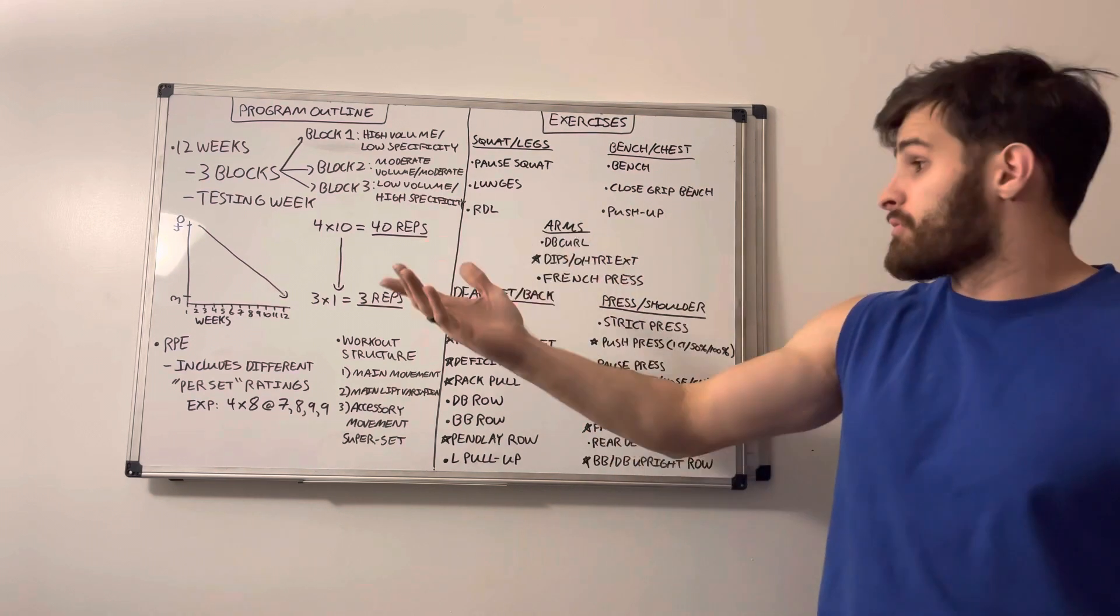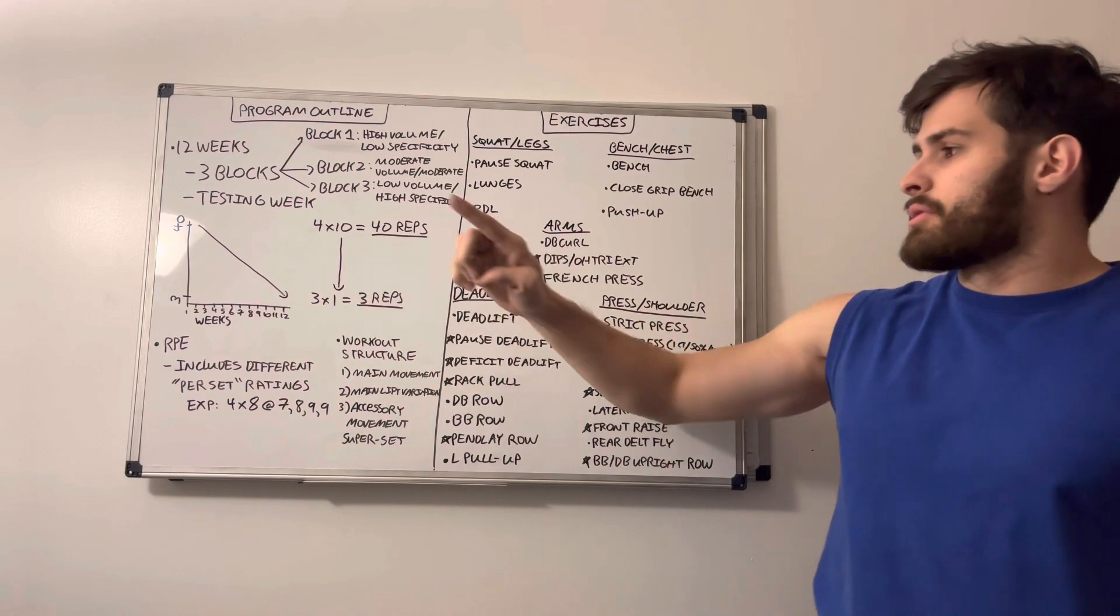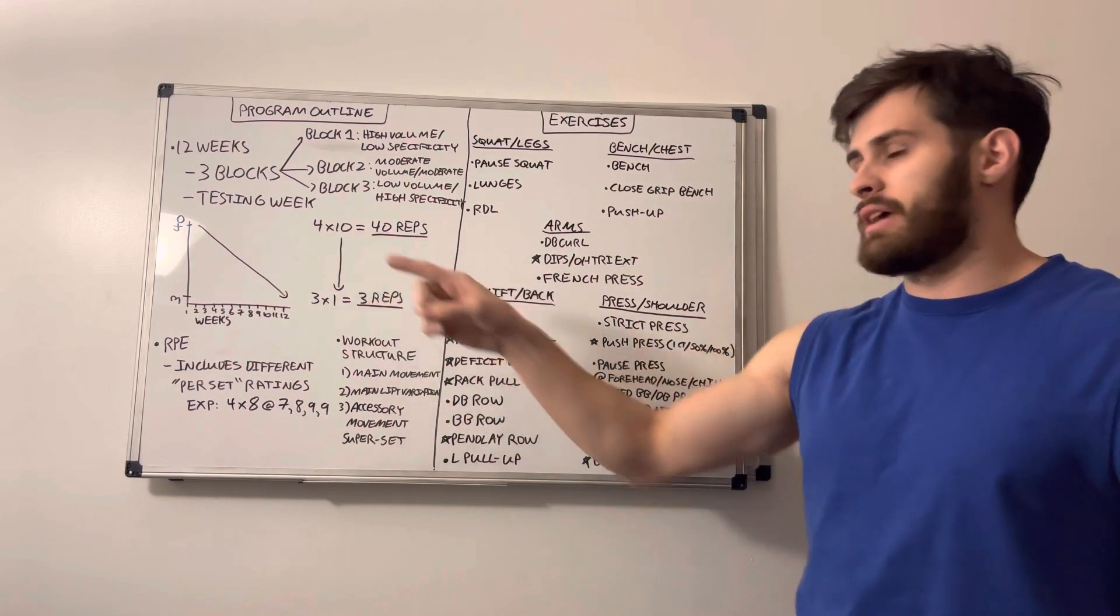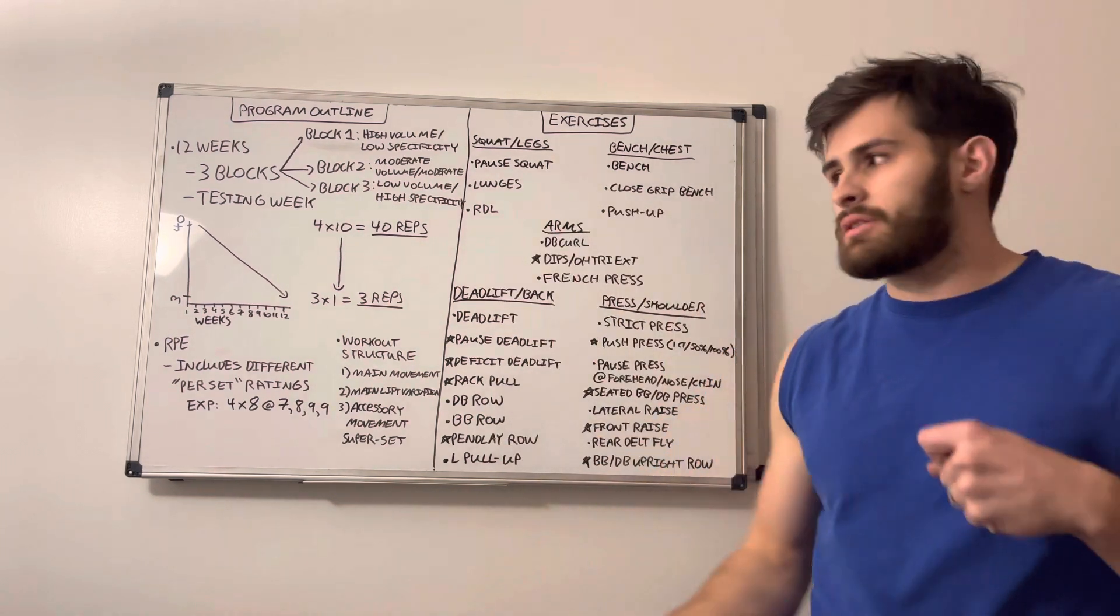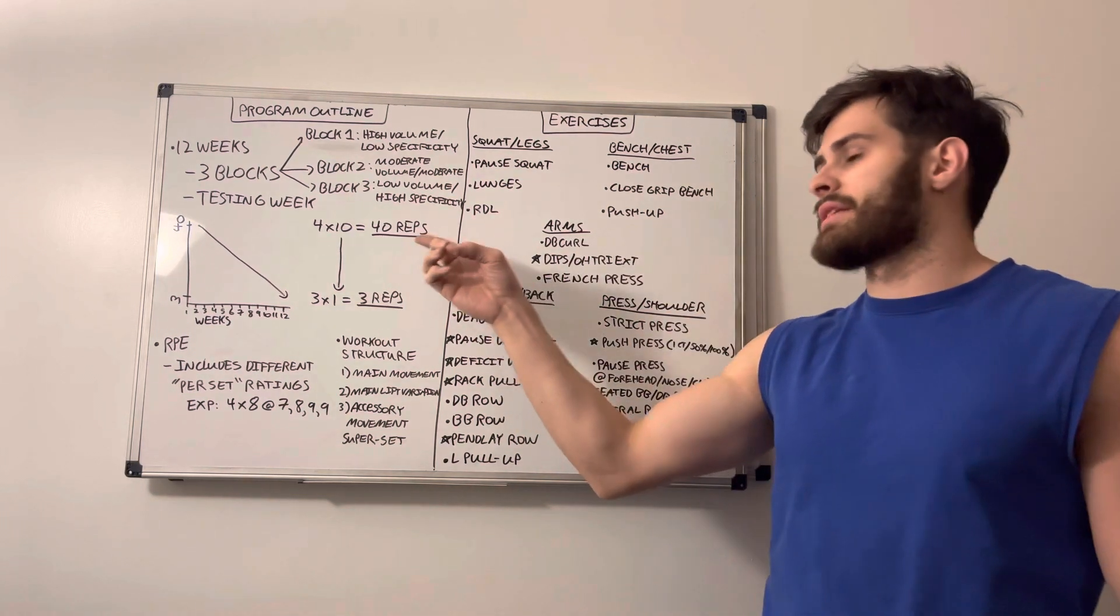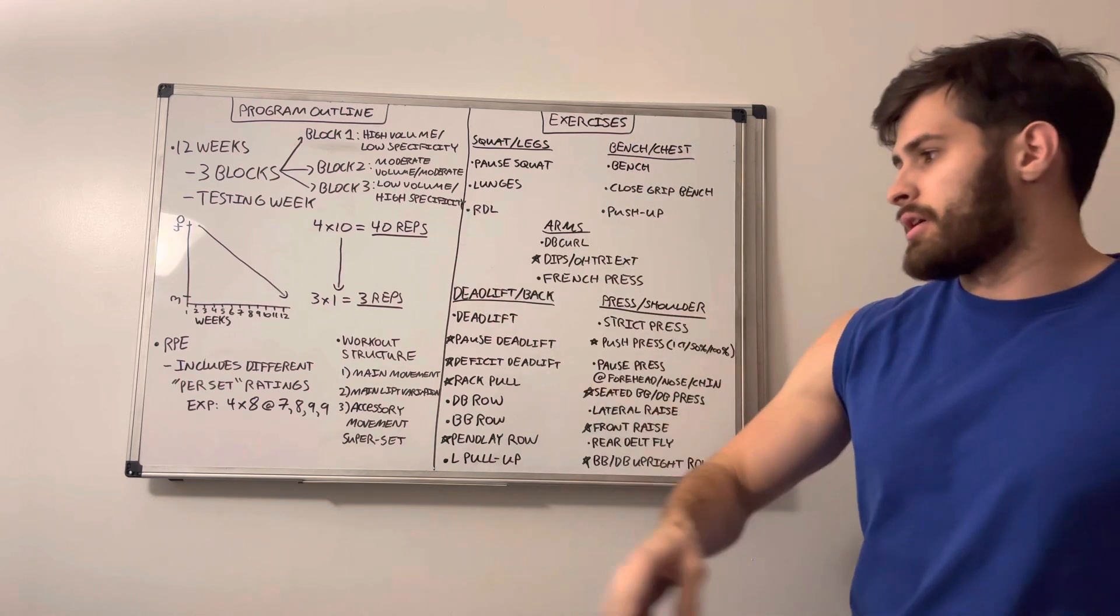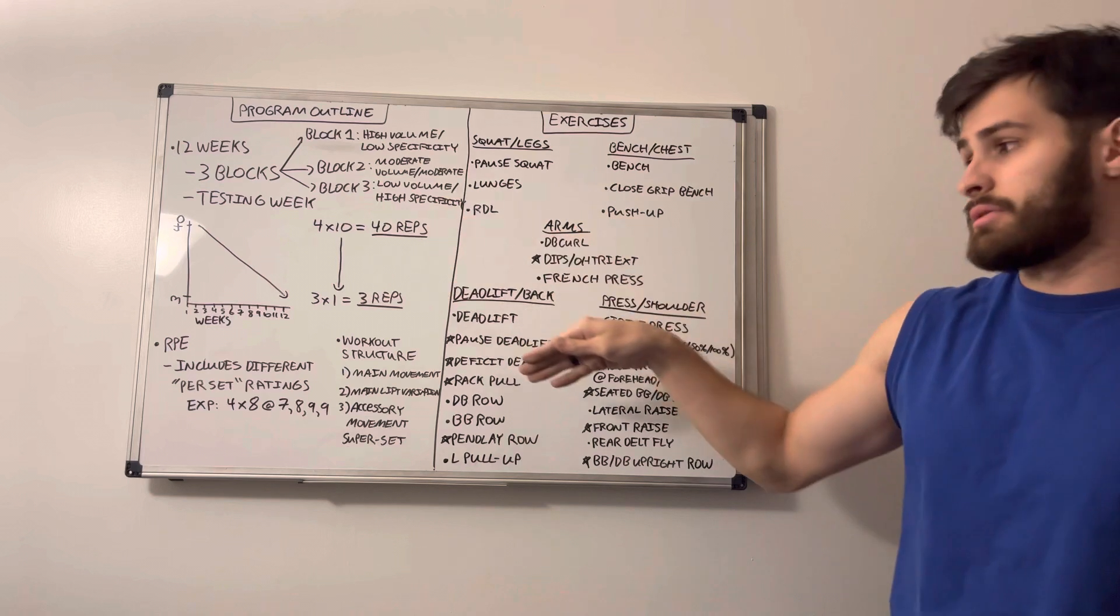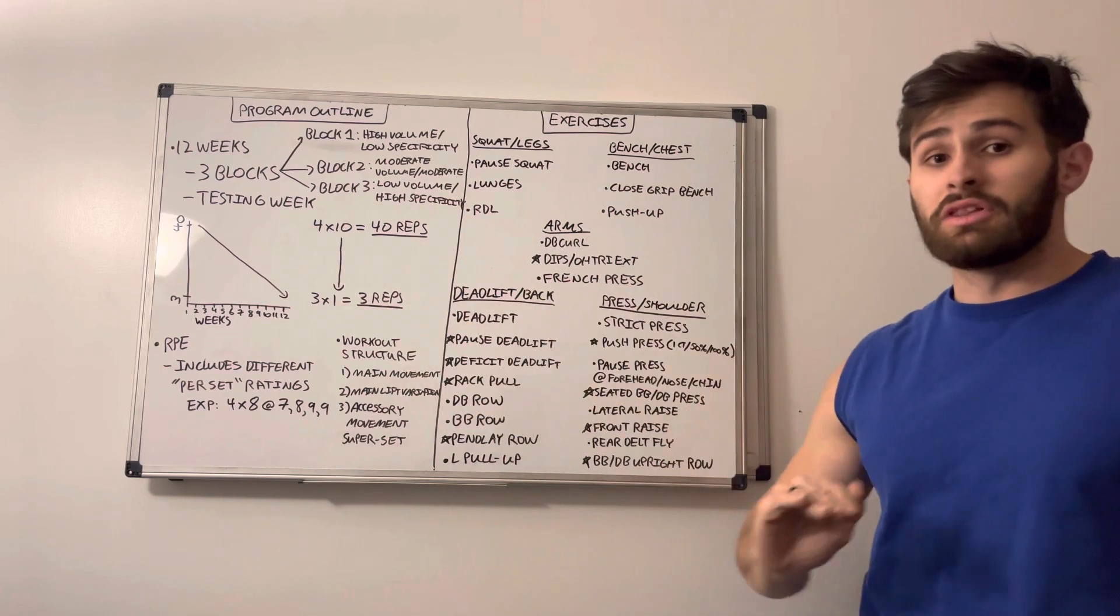As far as how the volume is set up here, as you can look at this graph, the greatest amount of volume that we'll be doing for any exercise is four sets of 10. This isn't applicable to all the movements, but some of the accessory work, the secondary movements that are variations of the main lifts will be at the top end, very top end, 40 reps. And then as the program goes on, as you see here, as the weeks progress, that volume is going to drop off to where we'll be leveling off at three reps at the very low end.